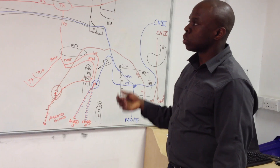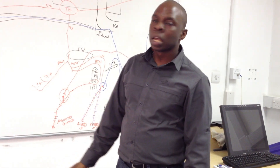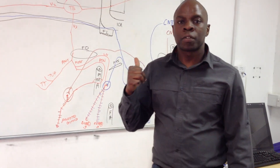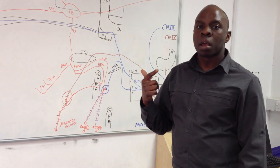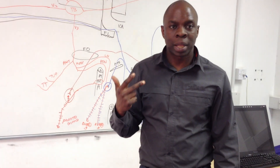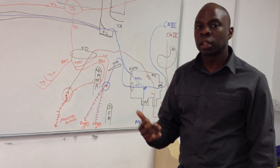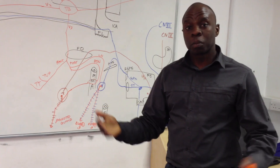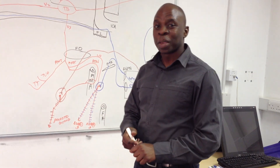I then went on to outline the different ganglia — we have the ciliary ganglion, pterygopalatine ganglion, submandibular ganglion, and otic ganglion. Now I'm going to do the sympathetic.